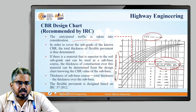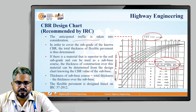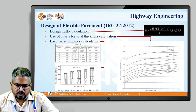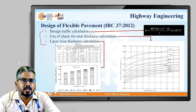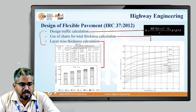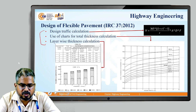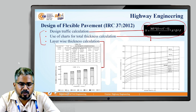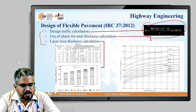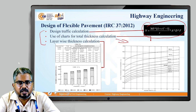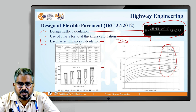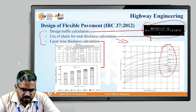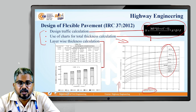The flexible pavement is designed based on IRC 37:2012. The steps involve: first, design traffic calculation using the formula N = 365 × A × D × F × [(1+r)^n − 1] / r, where N is the cumulative number of standard axles in MSA, A is the initial traffic at completion in CVPD, D is the lane distribution factor, F is the vehicle damage factor (VDF), n is the design life in years, and r is the annual growth rate of commercial vehicles.